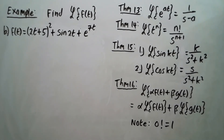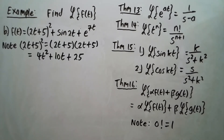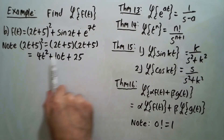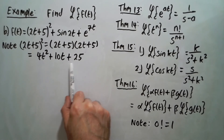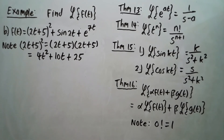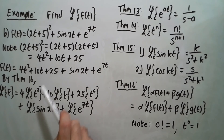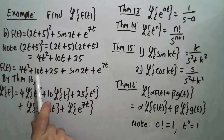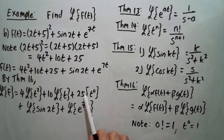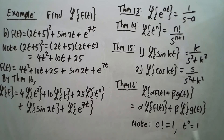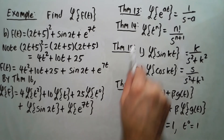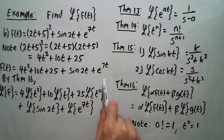Expanding 2t plus 5 squared by multiplying it out, you get 4t squared plus 10t plus 25. Rewriting f using this expansion and then applying Theorem 16, we can distribute the Laplace to get 4 times Laplace of t squared plus 10 times Laplace of t plus 25 times Laplace of t to the 0 — writing 1 as t to the 0 so we can use Theorem 14 — plus Laplace of sine of 2t plus Laplace of e to the 7t.